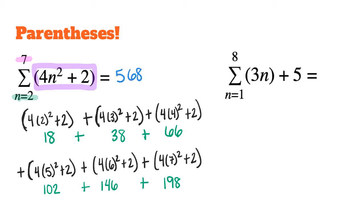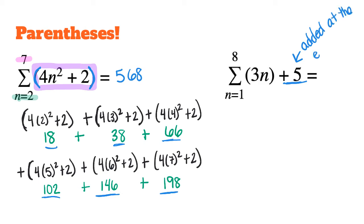It is very important to notice that in my argument, the entire expression wrapped in parentheses must be evaluated before adding the results together. So it is important to take care of those parentheses. Now notice what is different between the example on the left and the example on the right: on the right, there is a plus 5 that is not included inside the parentheses, which means it will be added at the very end.